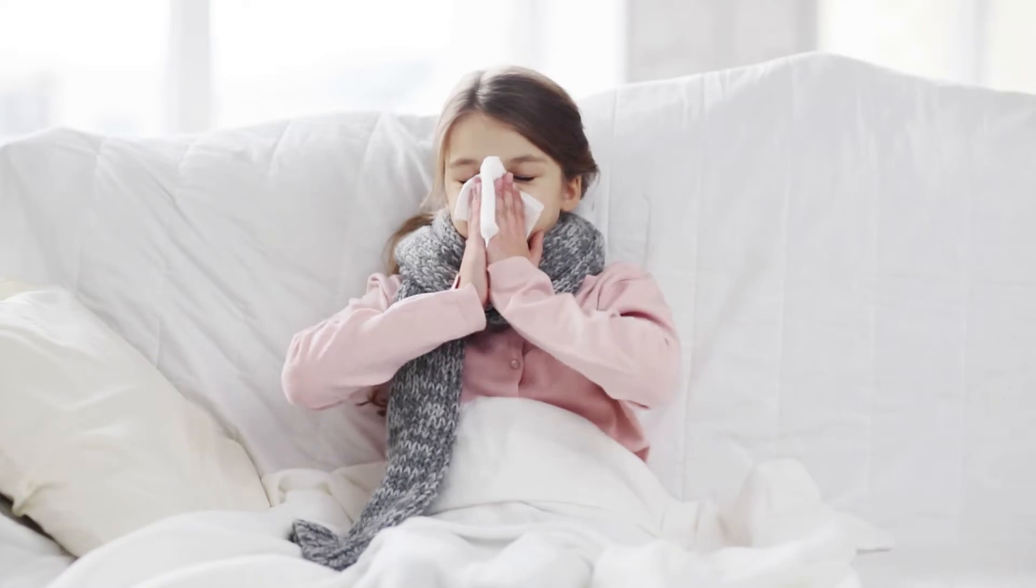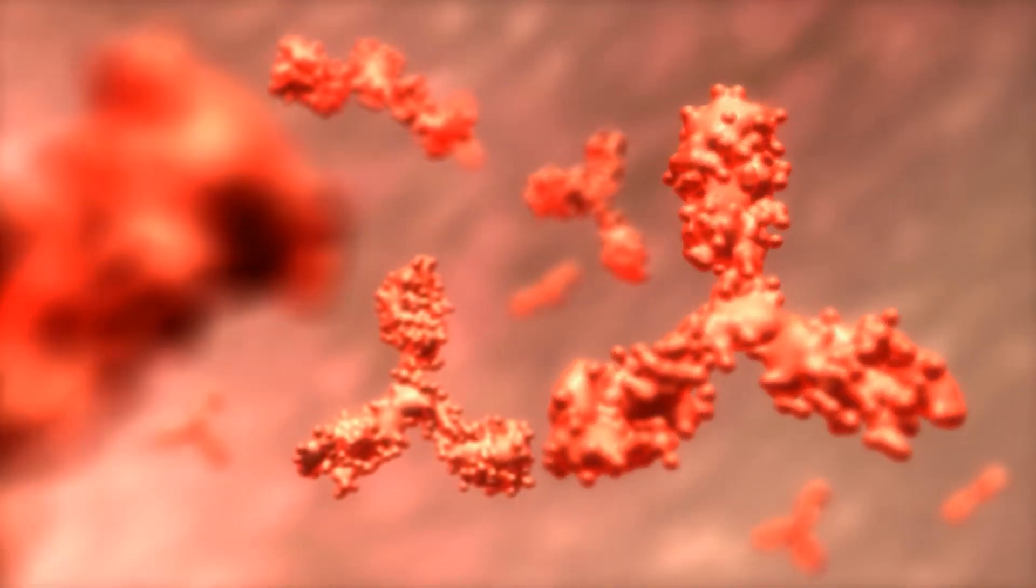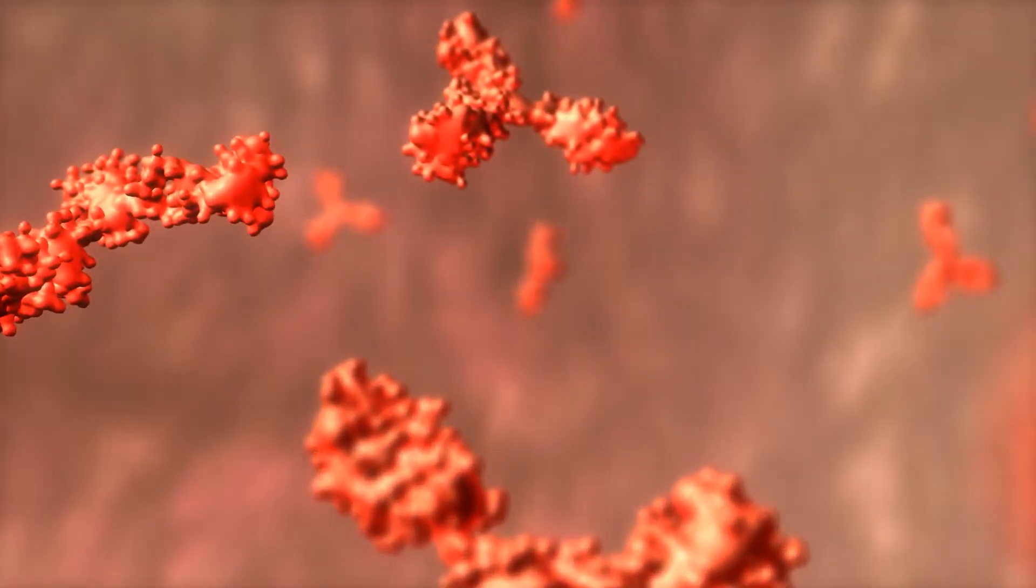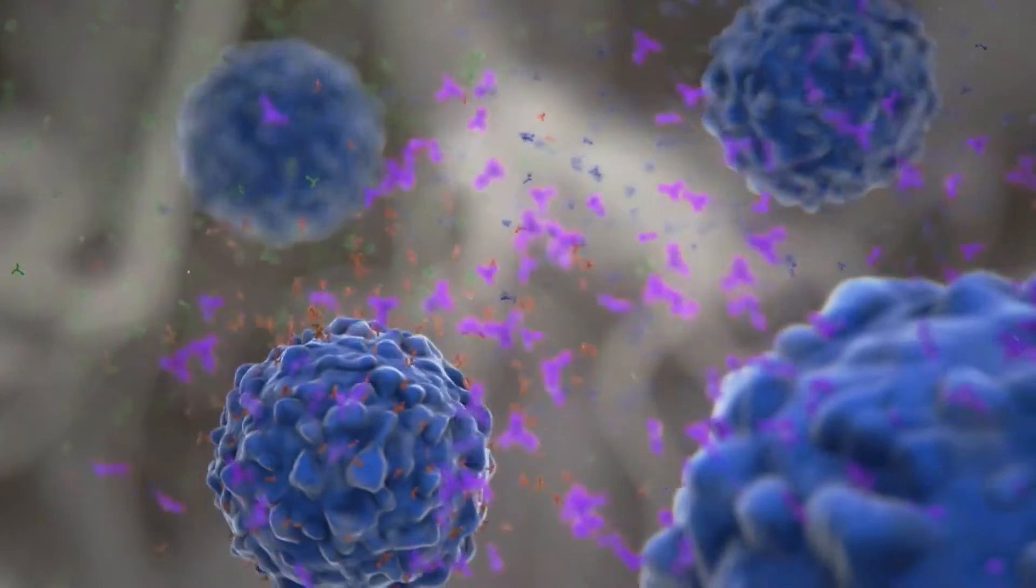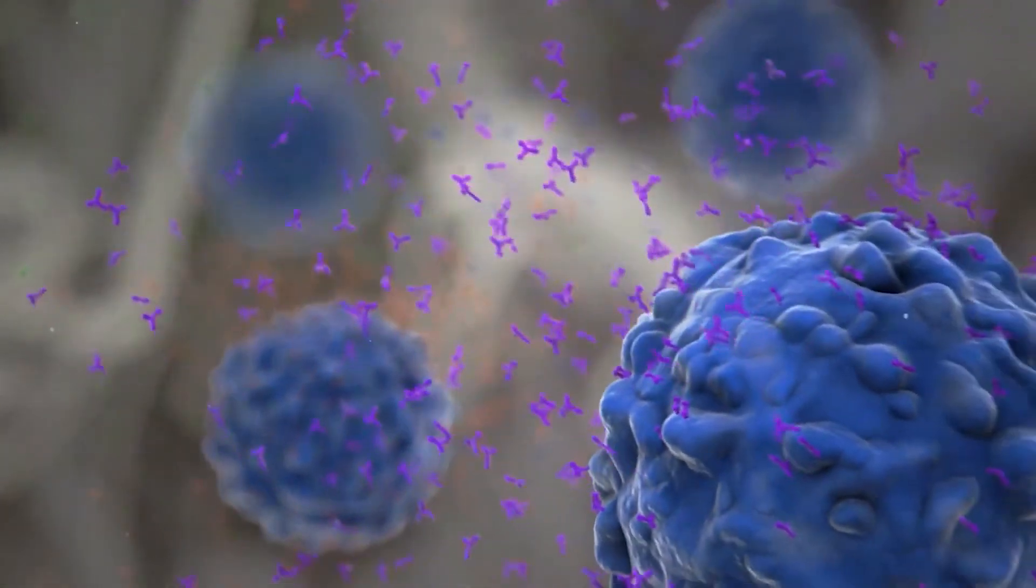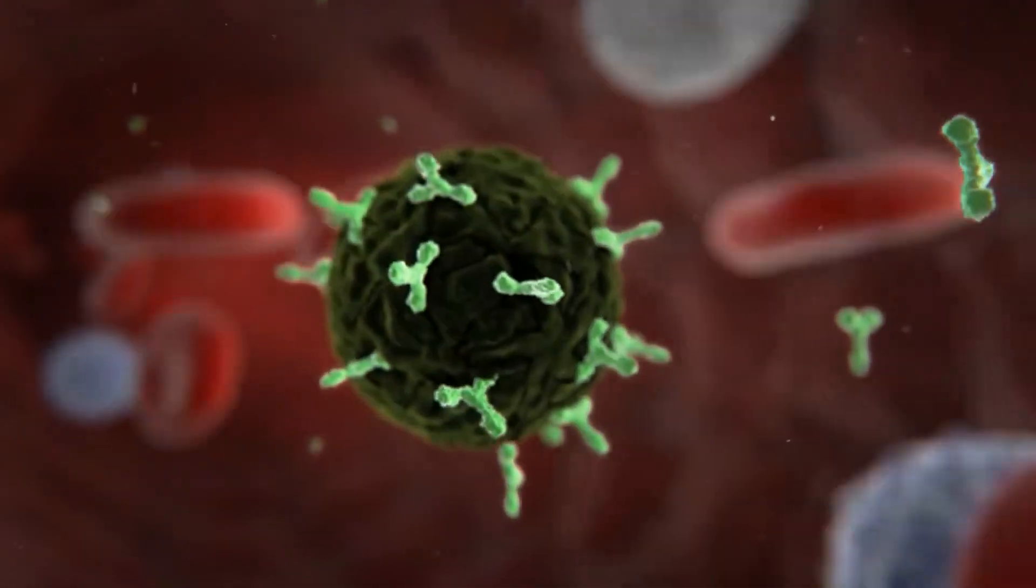The acquired immune system with help from the innate system produces antibodies to protect your body from a specific invader. The antibodies stay in your body. It can take several days for them to develop, but after the first exposure the immune system will recognize the invader and defend against it.